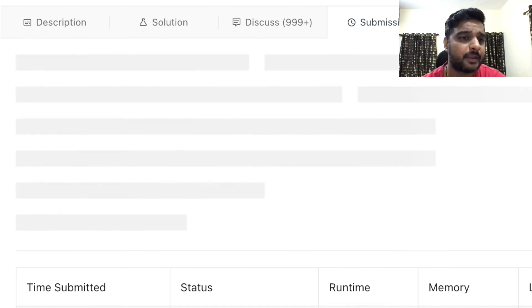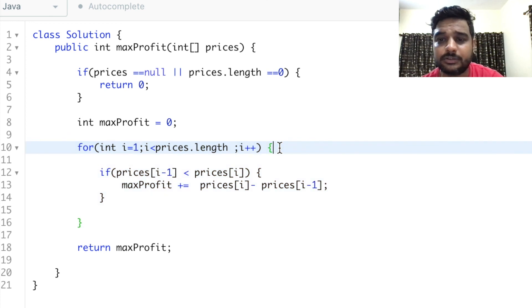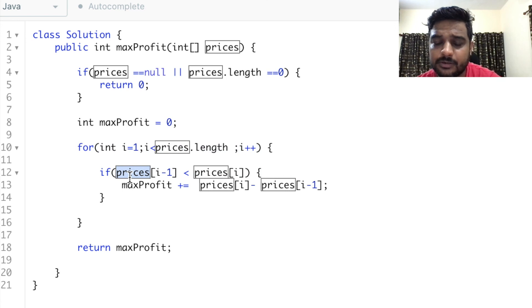It's working and it's faster than 100 percent of submissions. Let's talk about the time complexity. Since we're only traversing through the prices and checking current with previous, the time complexity is O(n). For space complexity, we just have one maxProfit variable, so it's O(1).